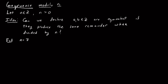Let's think about what numbers have remainder 3. For example, 3, when I divide it by 7, has remainder 3, because by the division algorithm I could write 3 as 7 times 0 plus 3. If I look at the integer 10, it has a remainder of 3 because I could write this as 7 times 1 plus 3. If I look at the integer 24, it has a remainder of 3, because 24 is 7 times 3 plus 3.